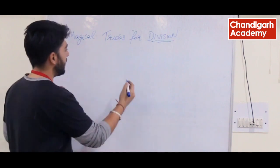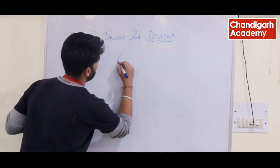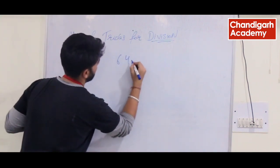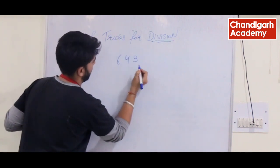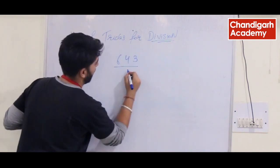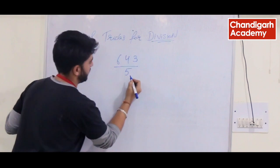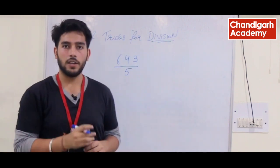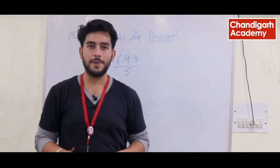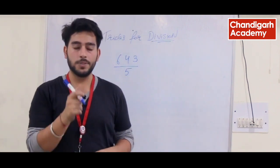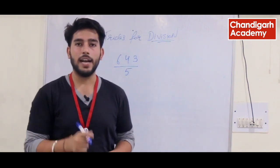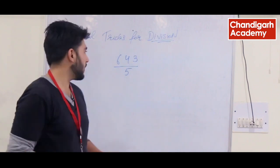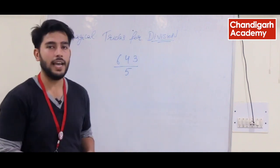Take a look at the question: you have to divide 643 by 5. So how will you do it? If we sit in normal division, it will take a lot of time. So I will tell you what is the short trick.